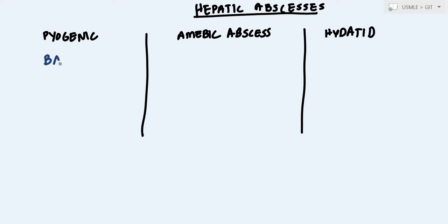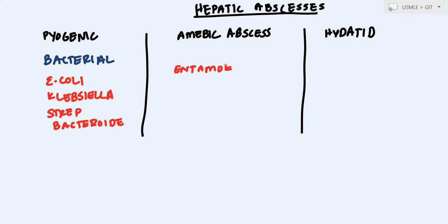This is going to be primarily bacterial. Which bacteria? The most common one is E. coli, but you can also get Klebsiella, strep pneumonia, and then some of the anaerobics such as Bacteroides. And with amoebic abscesses, there's only one—it's only Entamoeba histolytica. And with hydatid, we're only going to be looking at the Echinococcus, which is the tapeworm.